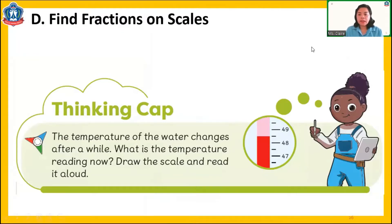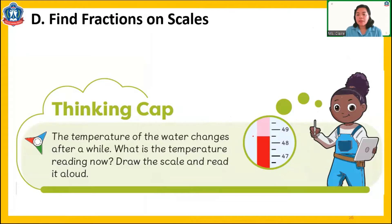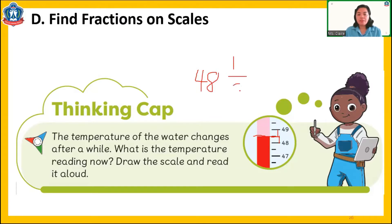So the temperature of the water changes after a while. What is the temperature reading now? Look at the thermometer — it goes down from 50. It moves to between 48 and 49, in the middle. From 48 until this small line here, that is one half. One half and one half is equal to one. So if this is 48 and another one half, the temperature goes down — that is 48 and a half. So this is the new temperature reading now.